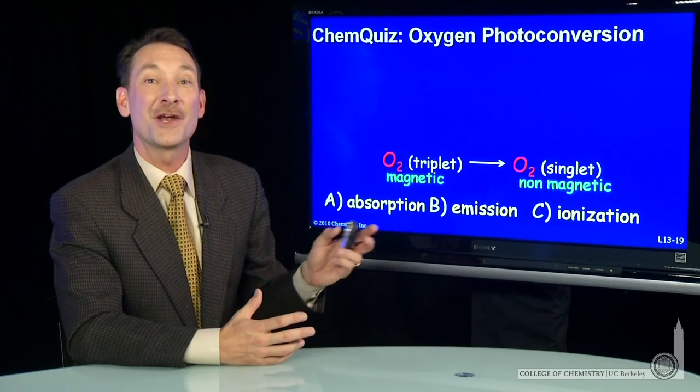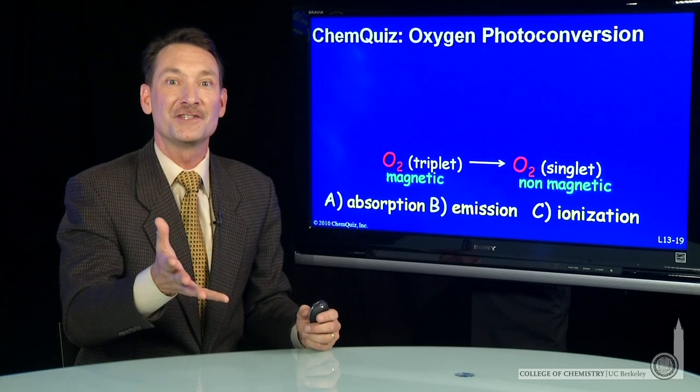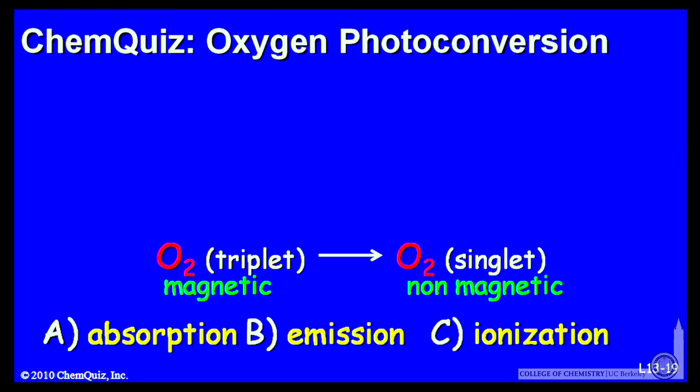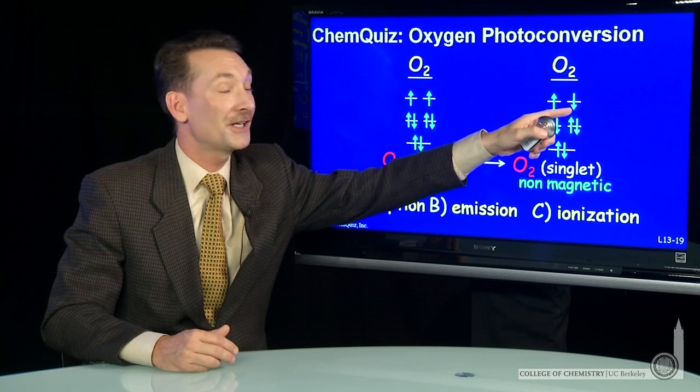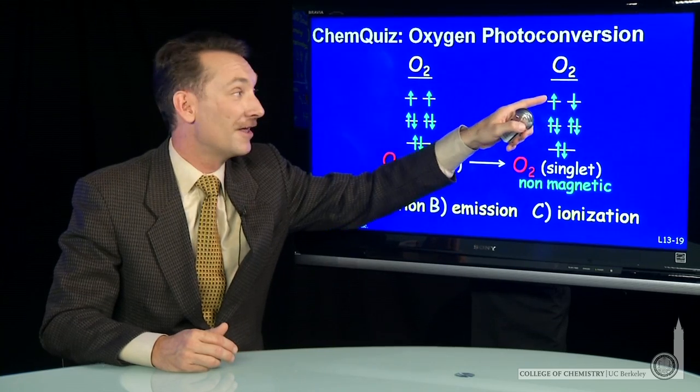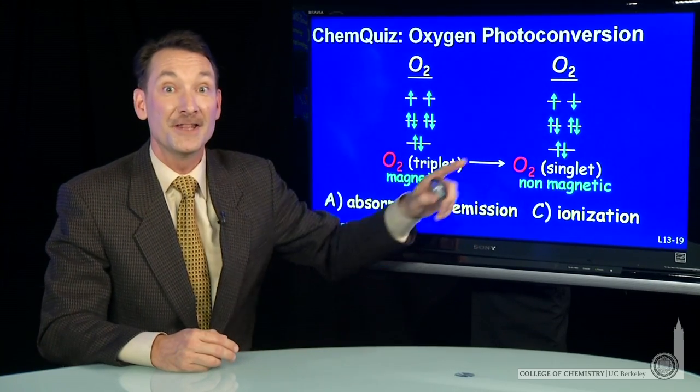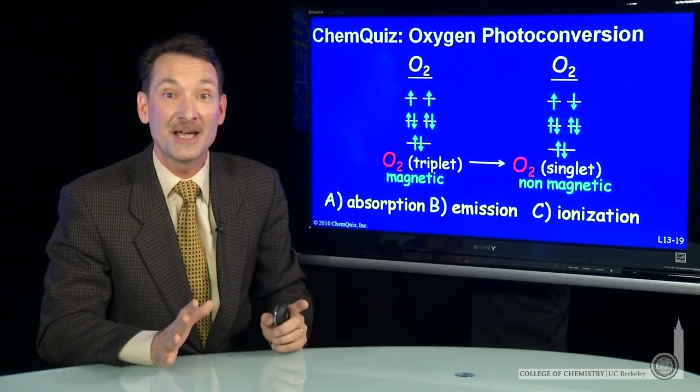We're talking about paramagnetic oxygen undergoing a transition to become diamagnetic. So here's paramagnetic ground state oxygen with its two unpaired electrons. To get to a diamagnetic state, I could have one electron flip spin. Now, these would be effectively paired, and this would be a non-magnetic species, diamagnetic.